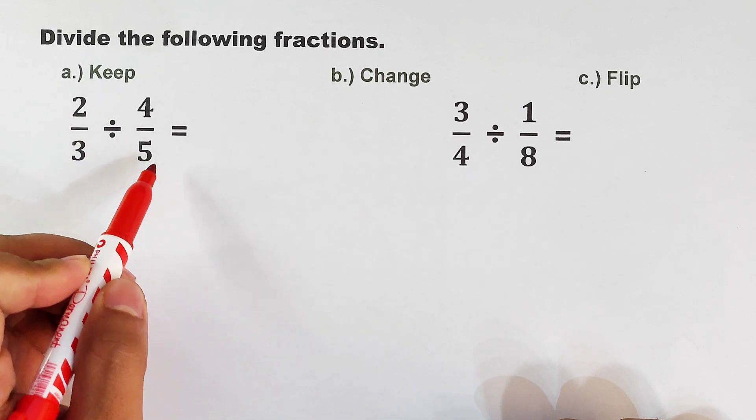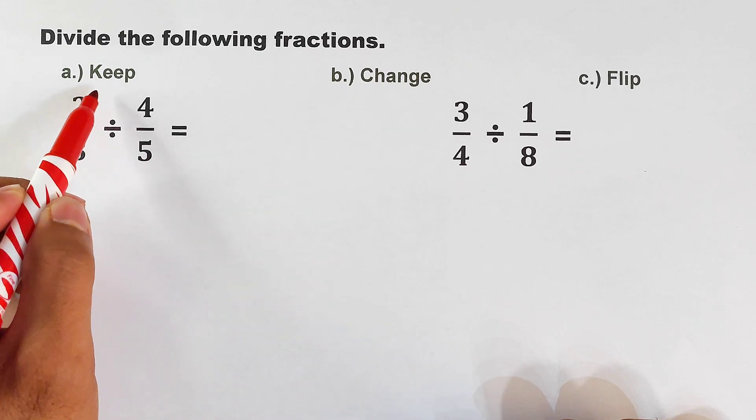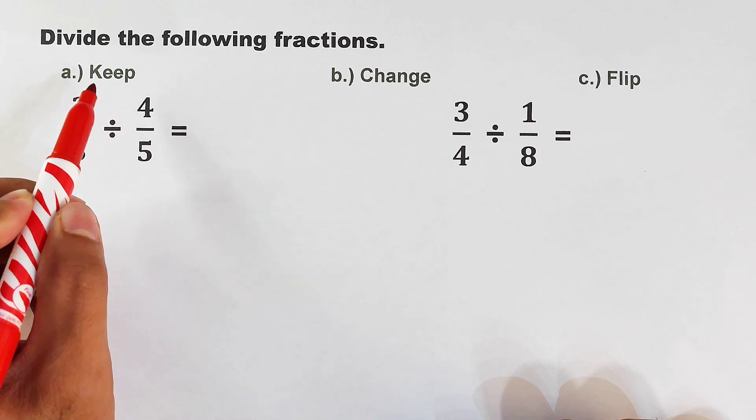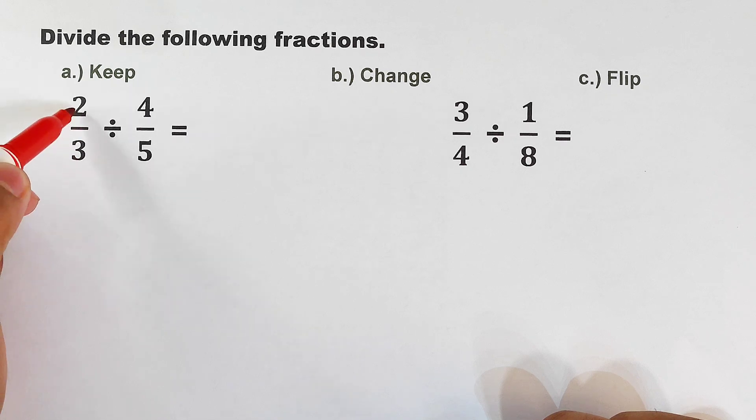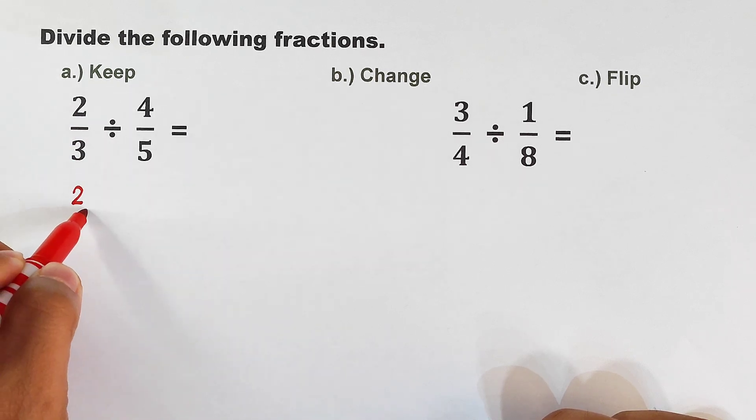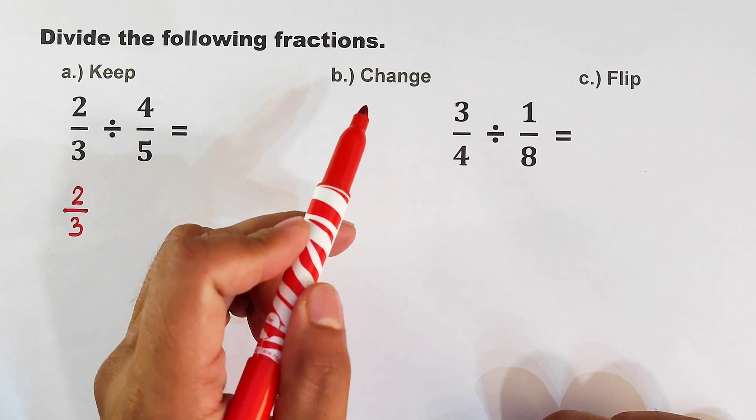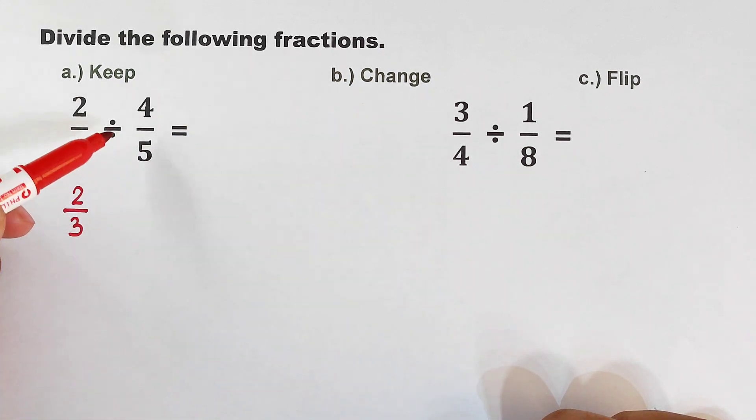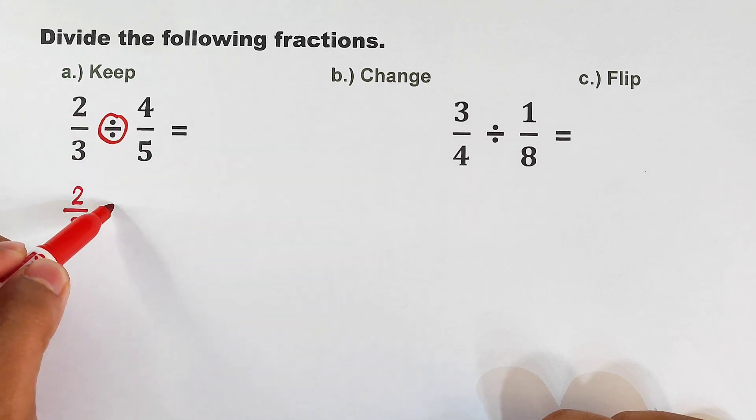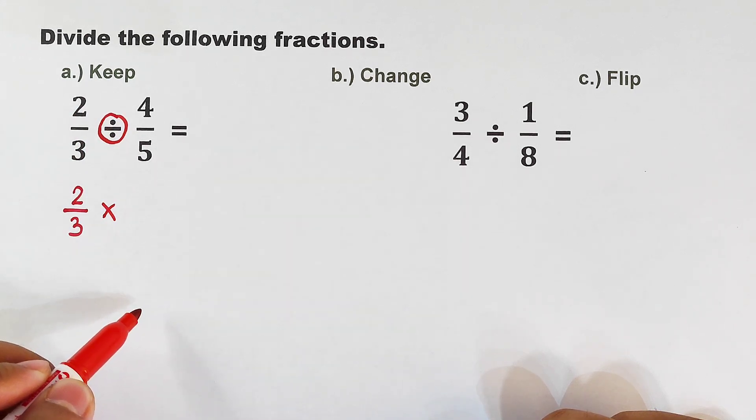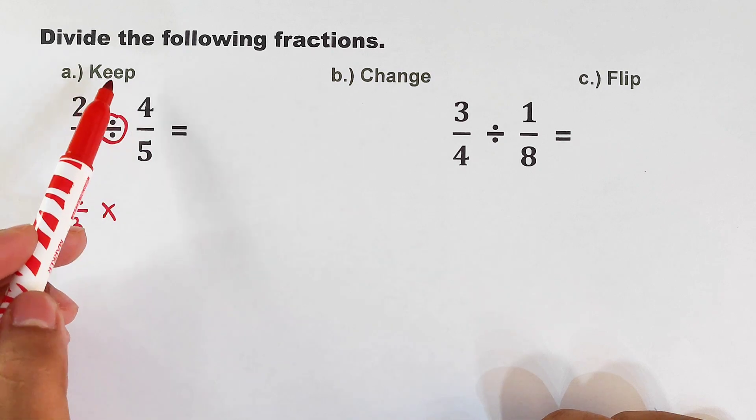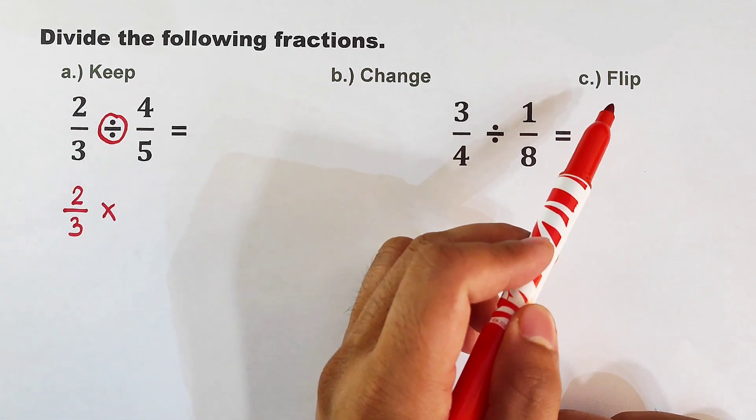This is your dividend and this is your divisor. First thing we need to do is follow the word Keep, meaning we will simply keep the first fraction or copy it as two over three, followed by the word Change. What does it mean when you say the word Change? We will change this operation division into multiplication.